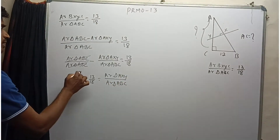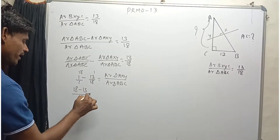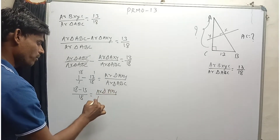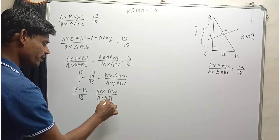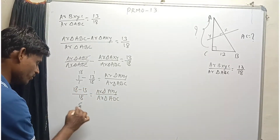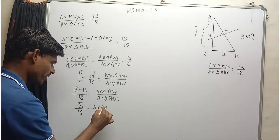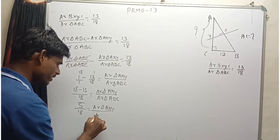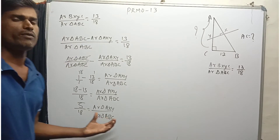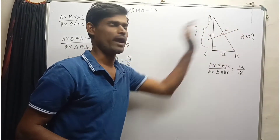Let's solve this. We have 18 minus 13 divided by 18, which gives us the ratio of area of triangle AXY to area of triangle ABC. So, area of triangle AXY divided by area of triangle ABC equals 5 by 18. Now we have the ratio of the areas of these two triangles, AXY and ABC.